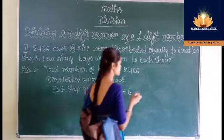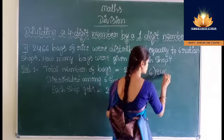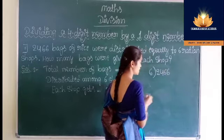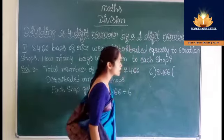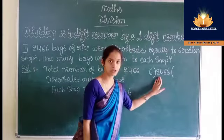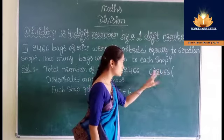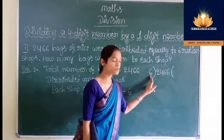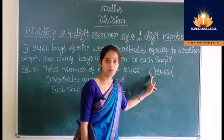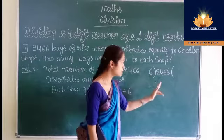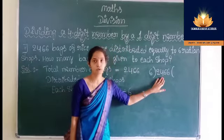So let us divide. 6 is the divisor and 2,466 is the dividend. The divisor is a one-digit number, so consider the leftmost digit of the dividend, that is 2. Compare 2 with 6 — 2 is less than 6, so we cannot divide. That is why we consider the 2 leftmost digits of the dividend, that is 24.